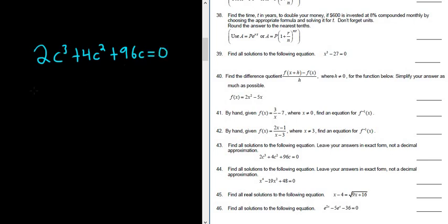So I guess we can start by trying to factor something out. It looks like we can factor a 2c out from each term. So we have 2c, parentheses.